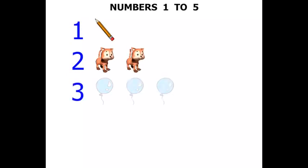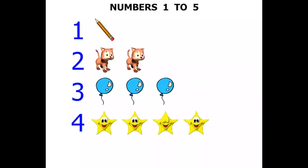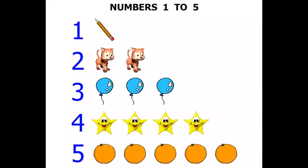One, pencil. Two, Pussycats. Three, Balloons. Four, Stars. And five, oranges. The numbers 1 through to 5.